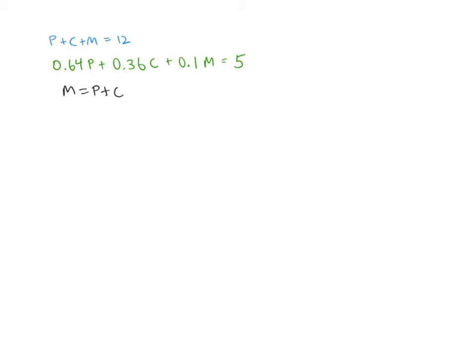I'm noticing that since M is equal to P plus C, I should be able to just substitute in for the expression P plus C, that's the same thing as M. So that means that M plus M is equal to 12. In other words, 2M is equal to 12. So M has to equal six.